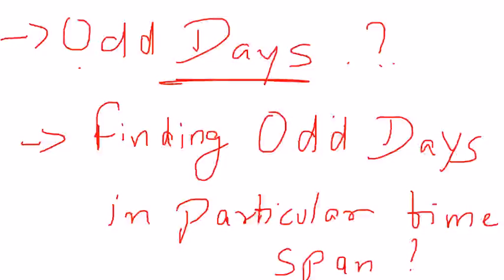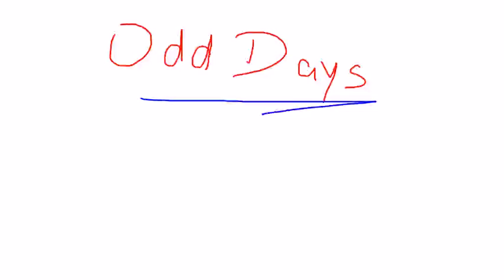Now, assuming you know which particular year is a leap year or not, we are ready to move to this video in which I'm going to discuss odd days — what basically are the odd days and how to find the number of odd days in a particular time span. So starting with the odd days: odd days are basically the days which are left out after formation of weeks.